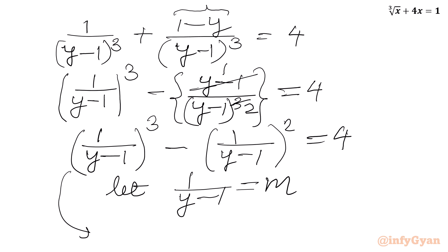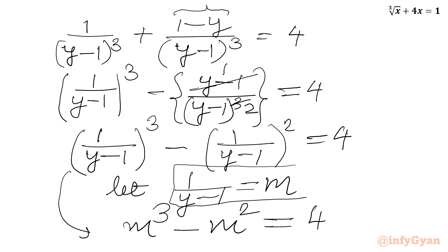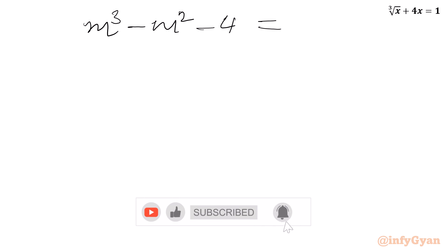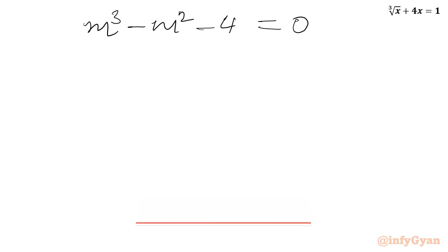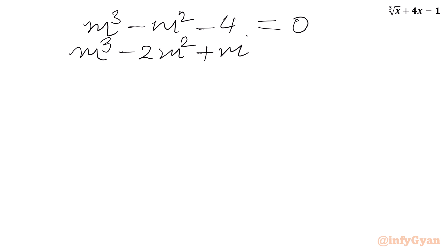So our equation becomes the cubic: m cubed minus m squared equal to 4. Let us solve this cubic: m cubed minus m squared minus 4 equal to 0. Now we will split the middle term minus m squared as minus 2m squared, then add m squared, giving minus 2m squared plus m squared minus 4 equal to 0.